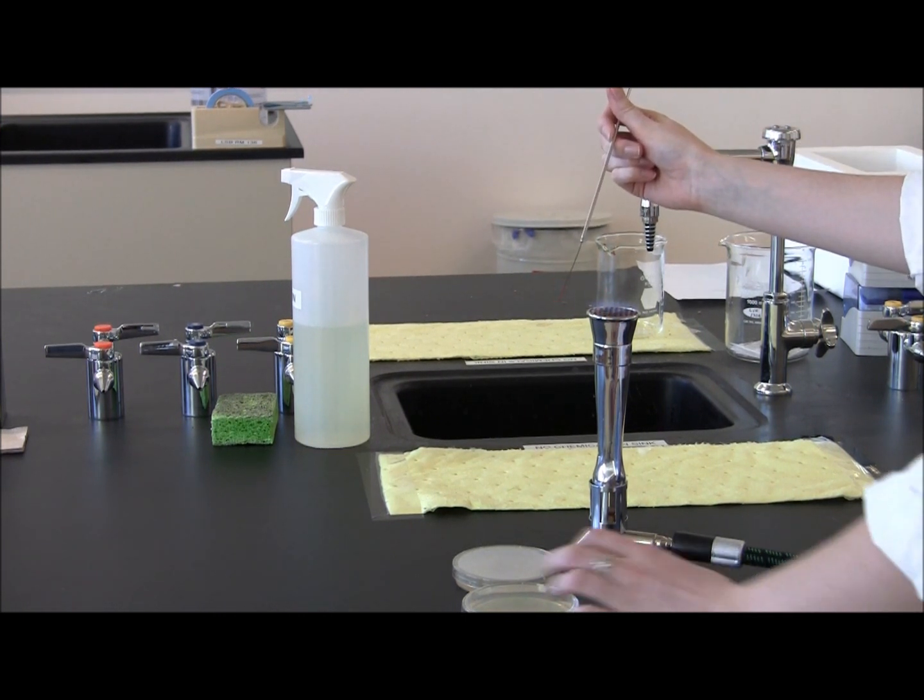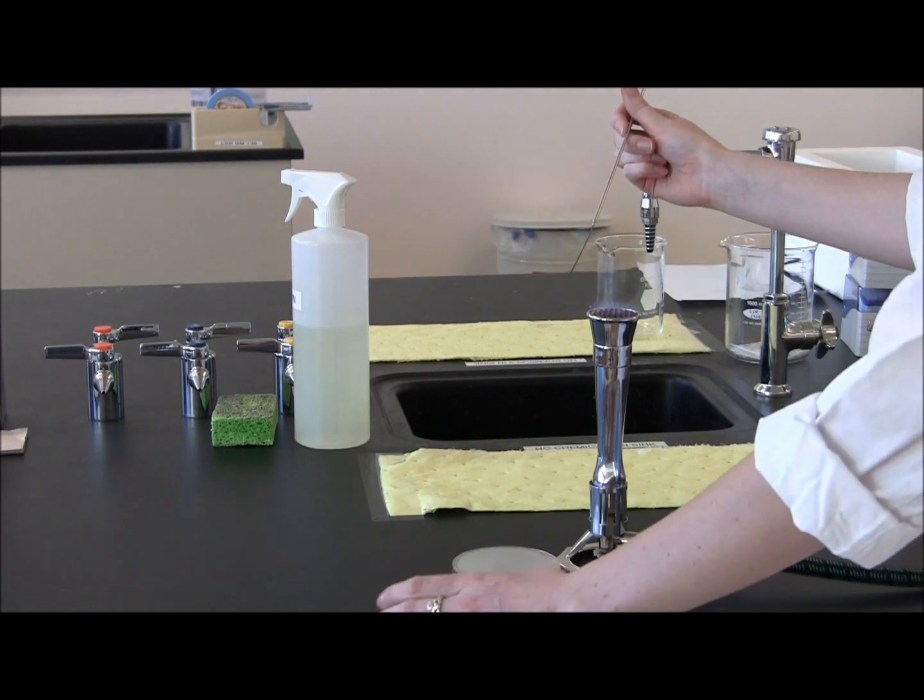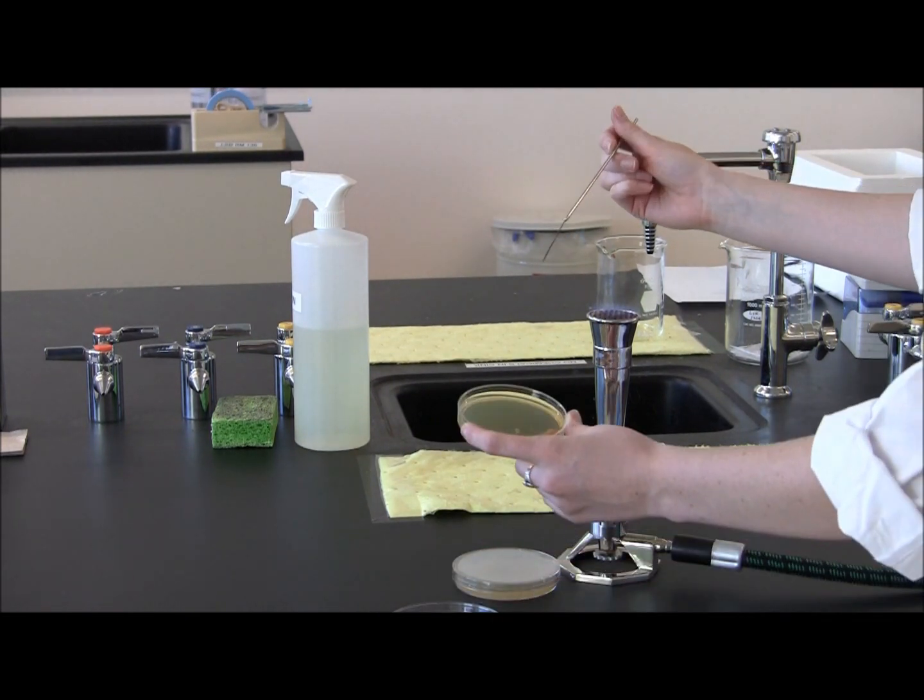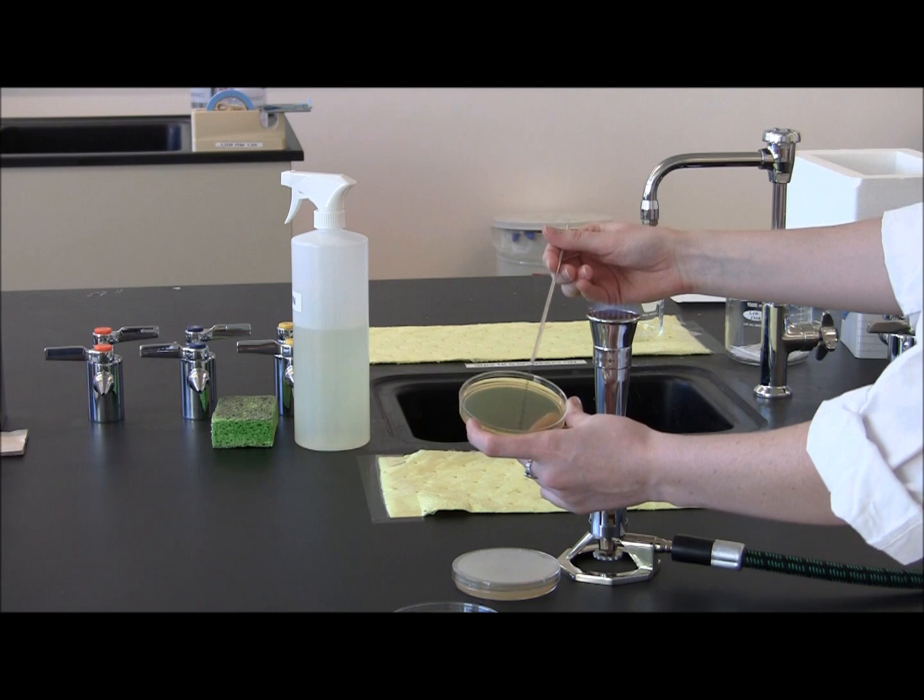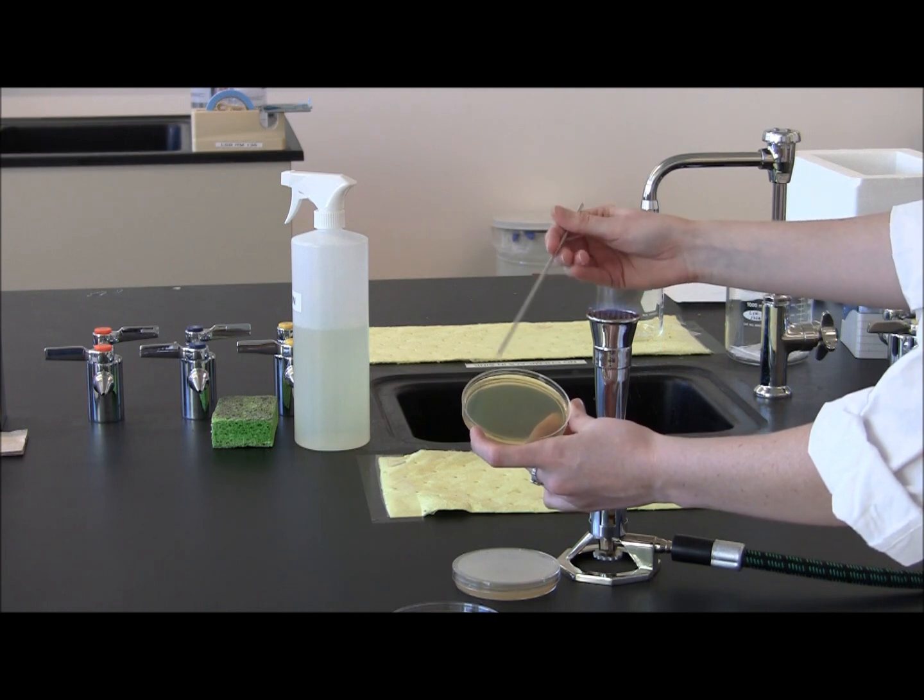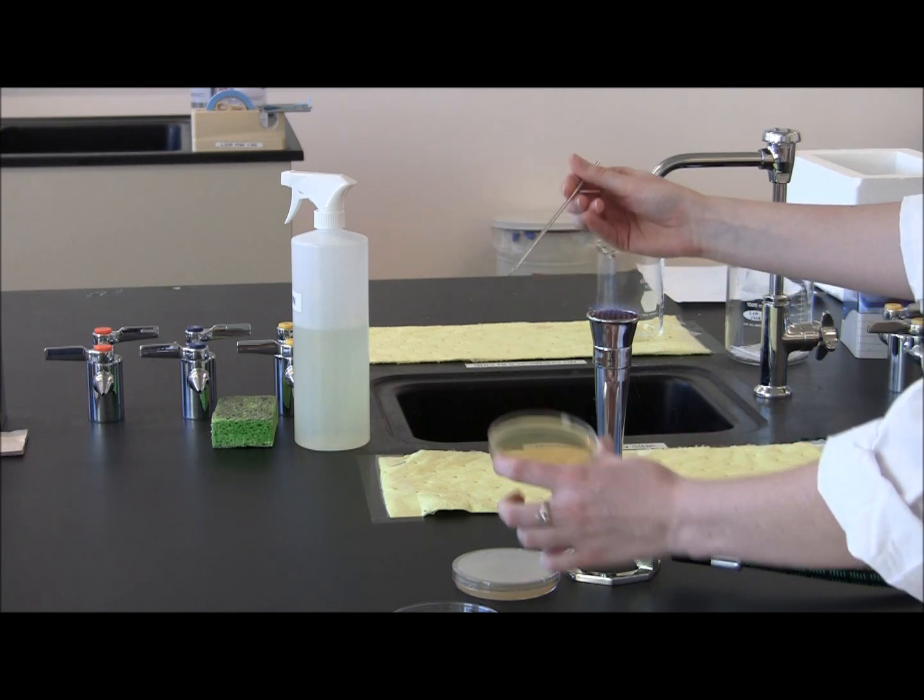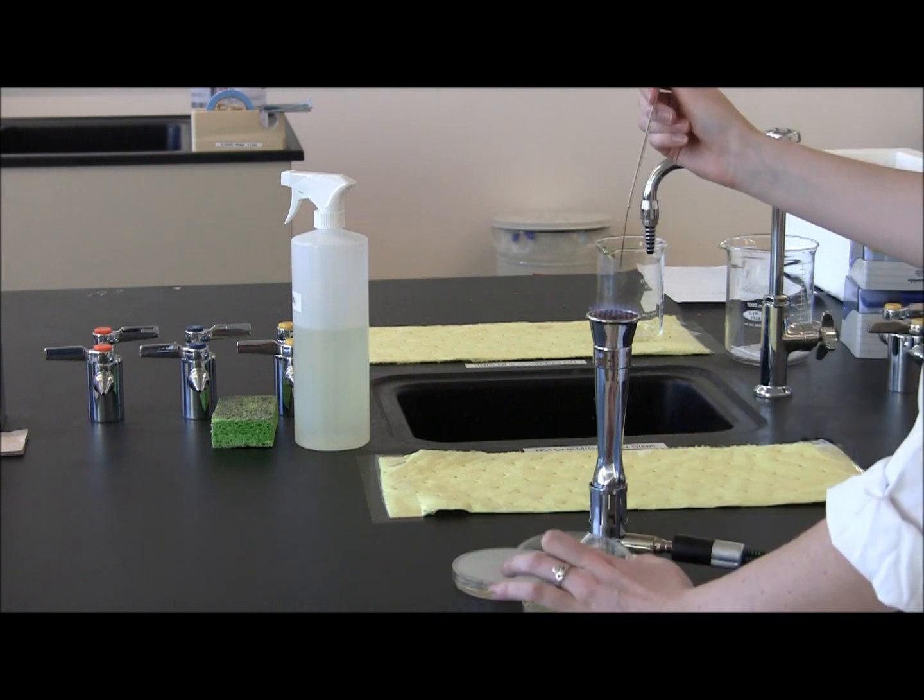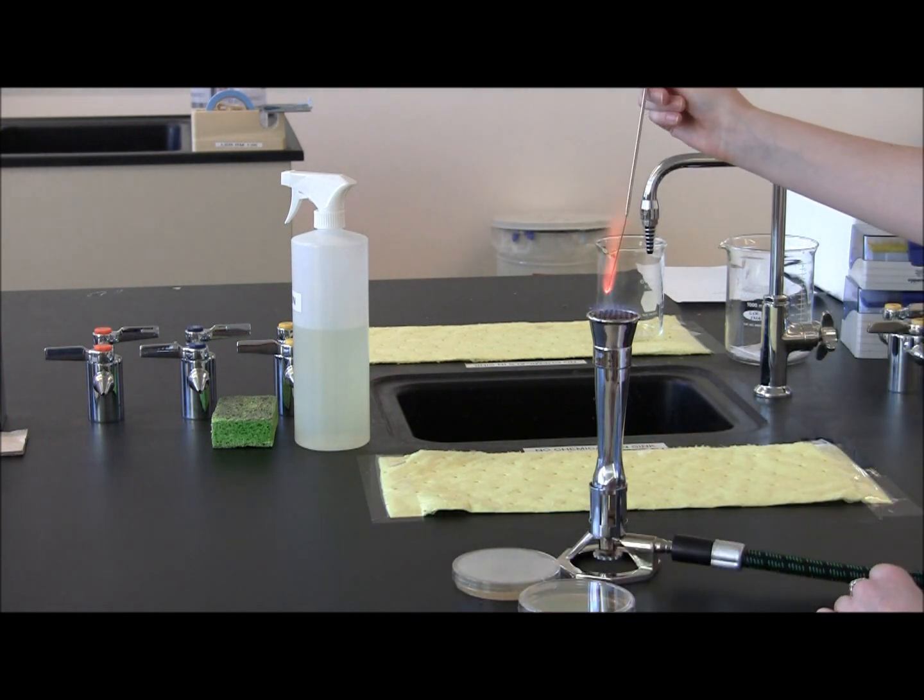Allow the loop to cool briefly, then remove the cover and do your second quadrant streak. Replace the cover and flame your loop again until it is red hot.